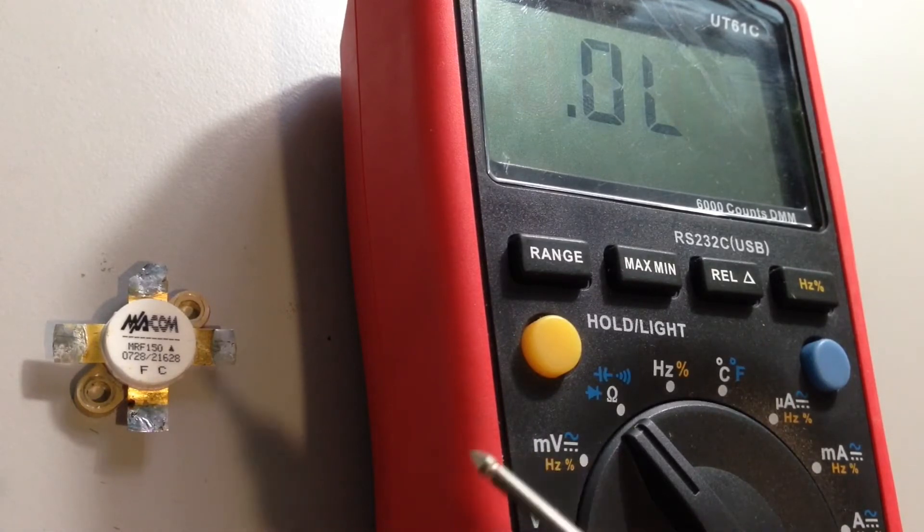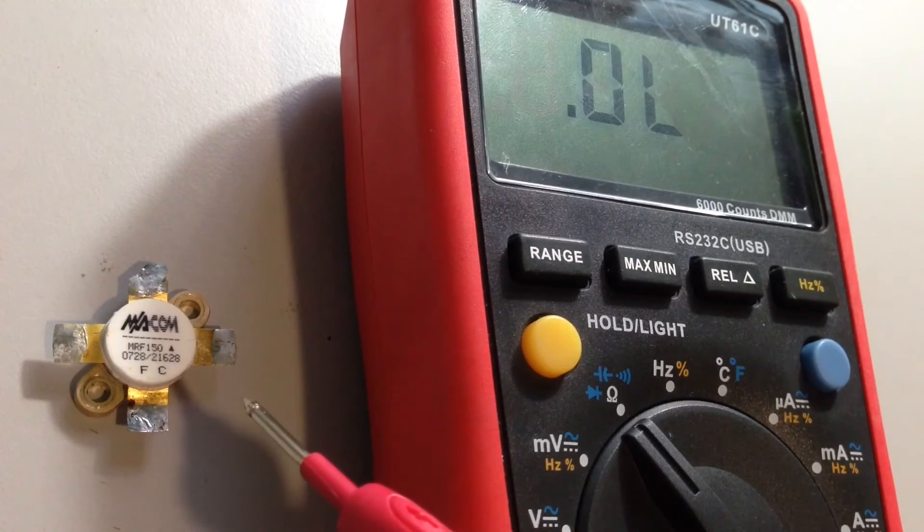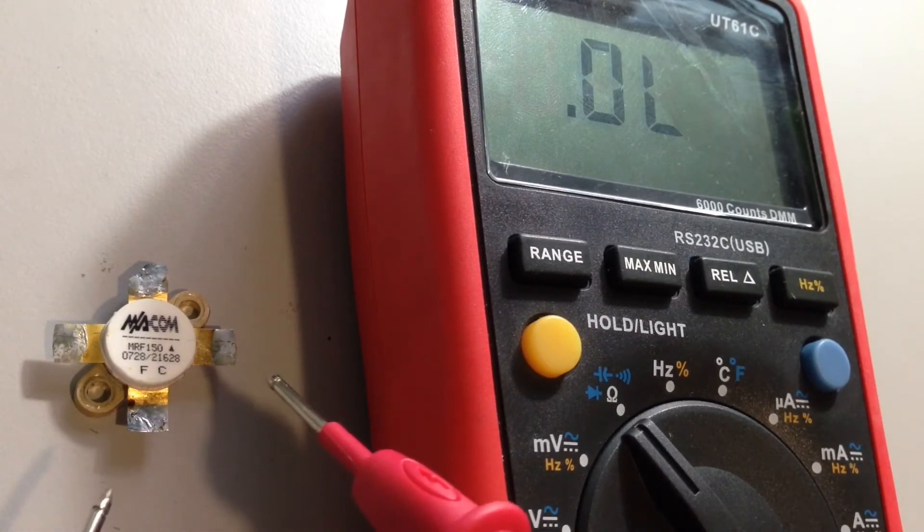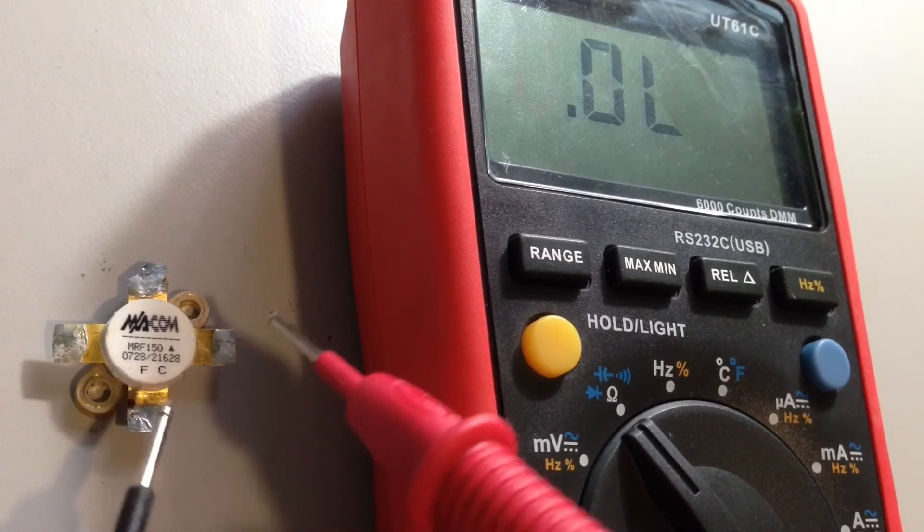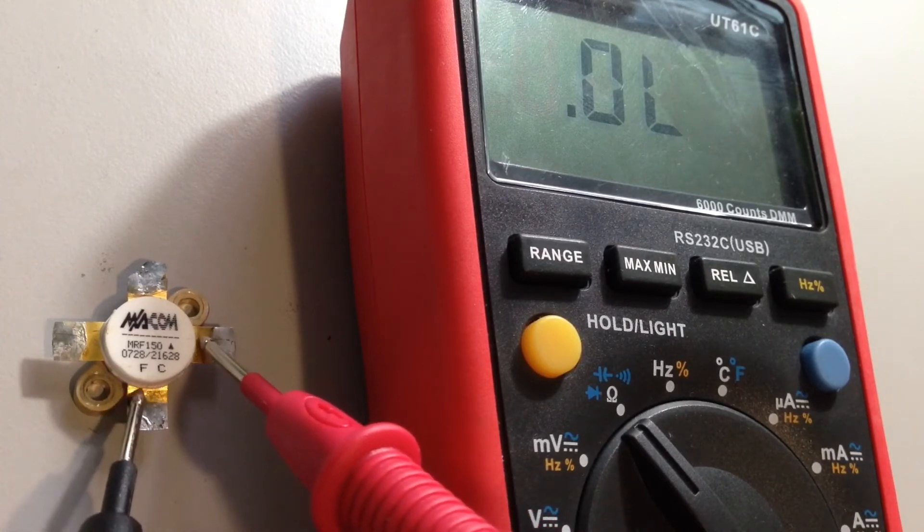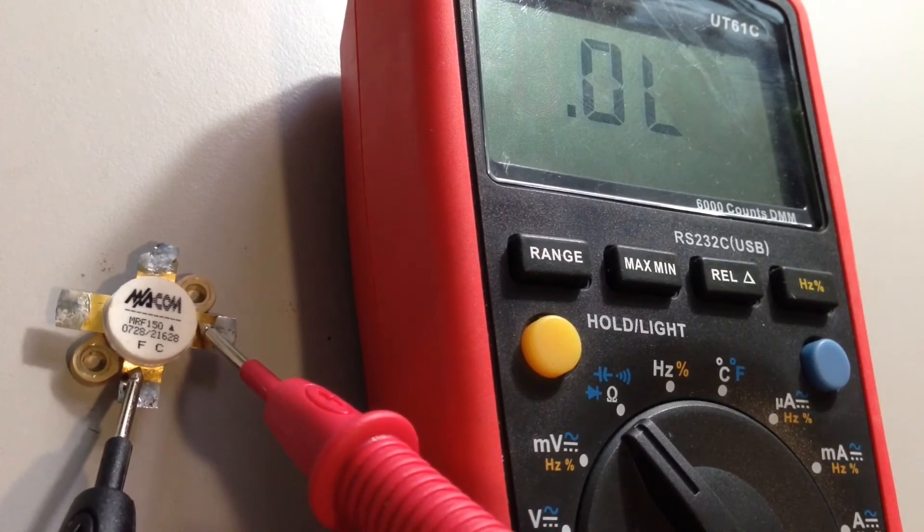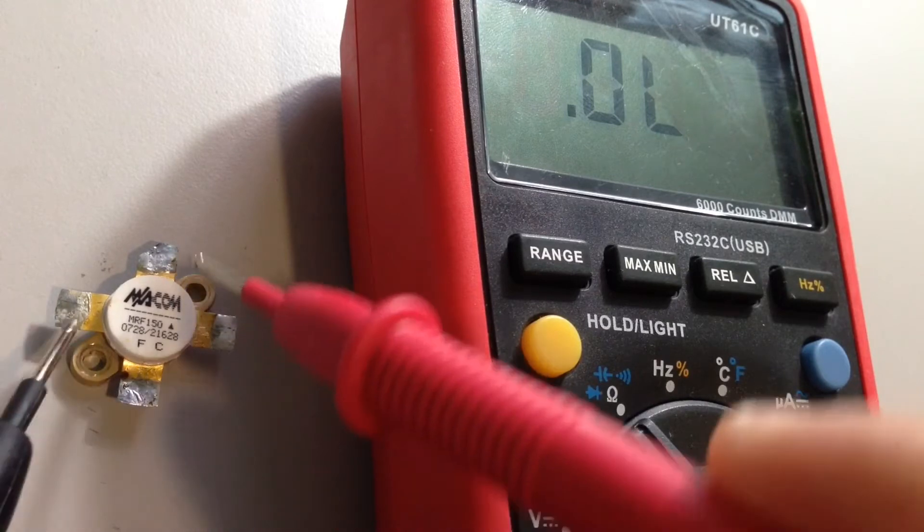So this is a MOSFET MRF150. We're going to turn it off first by shorting the lead. Okay, this is how you do it, the black and the red. And then we measure.